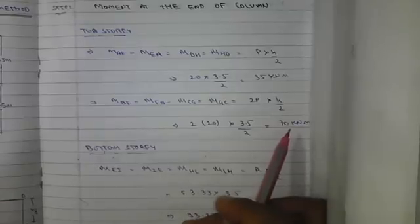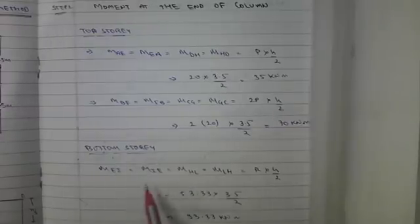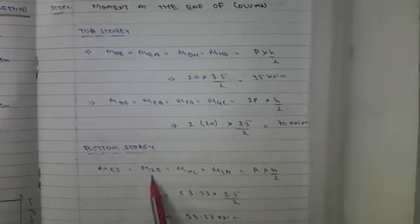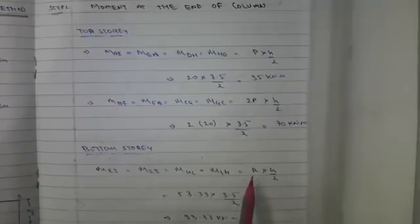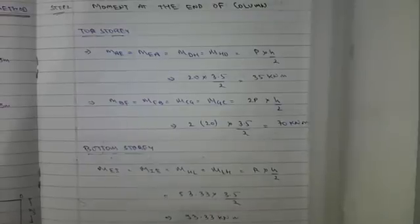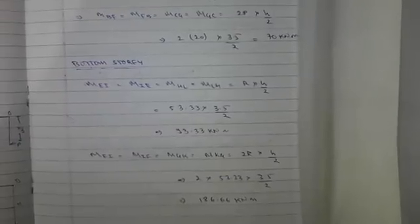For the bottom story, M_EI = M_IE = M_HL = M_LH for all exterior columns, calculated as r × h/2 = 93.33 kilonewton-meters. For interior columns M_FI, M_IF, M_GK, and M_KG, the force is double, so 2r × h/2 = 186.66 kilonewton-meters.